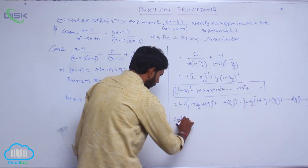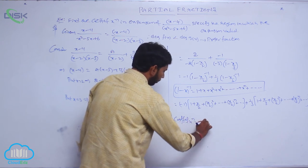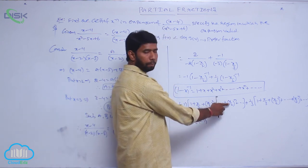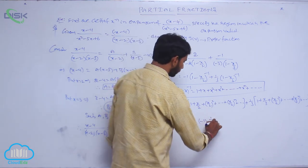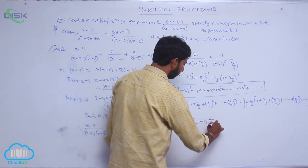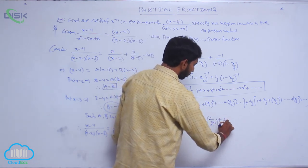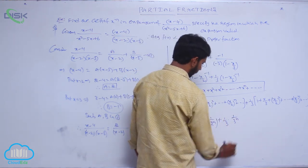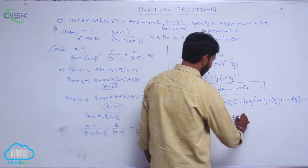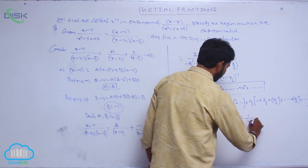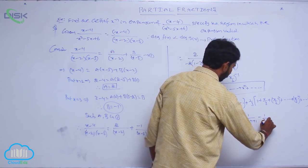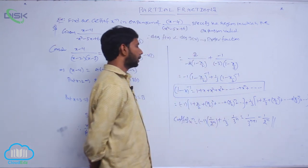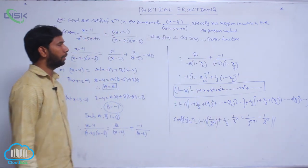Coefficient of x^n equals minus 1 times (1/2^n) plus (1/3)(1/3^n), which gives coefficient of x^n equal to minus 1 by 2^n plus 1 by 3^(n+1), minus 1 by 2^n.